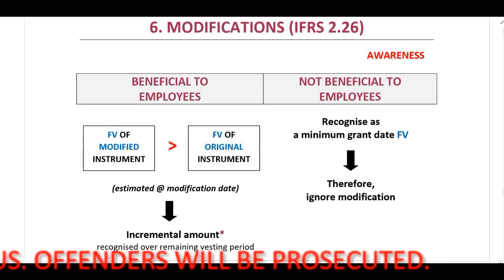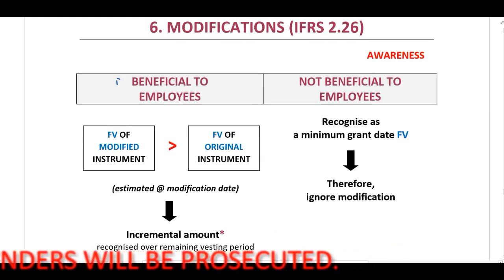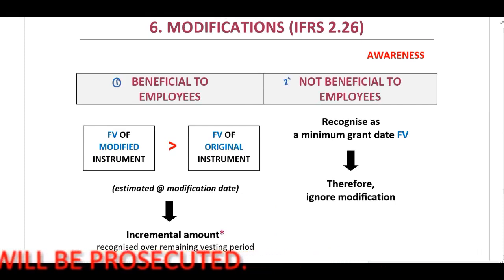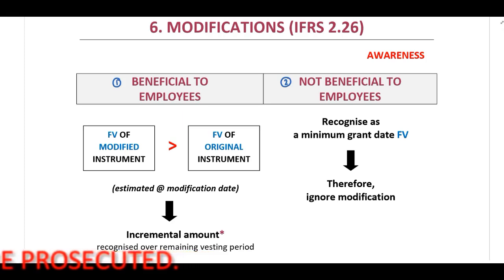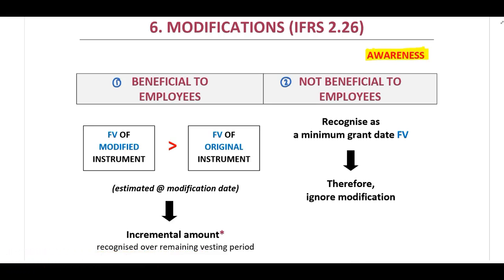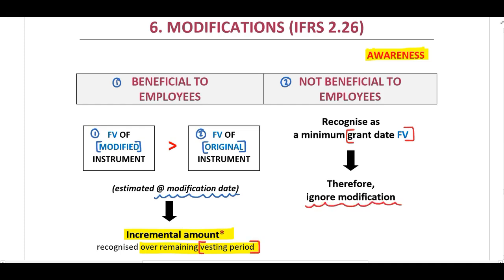First you will have to identify if this modification is beneficial to the employees or not beneficial to the employees. Modifications will be tested on an awareness level. When they indicate that this is beneficial to the employees, you need to determine the fair value of the modified instrument. If this exceeds the fair value of the original instrument at modification date, you will have to recognize an incremental amount, and this should be recognized over the remaining vesting period. If it is not beneficial to the employees, recognize as a minimum the grant date fair value — therefore you will ignore the modification and do nothing.